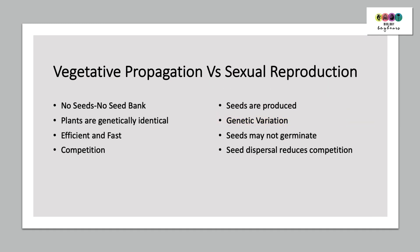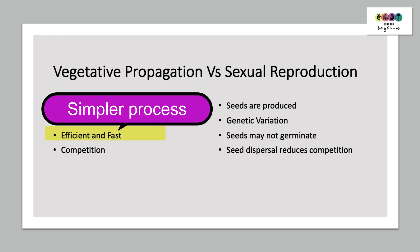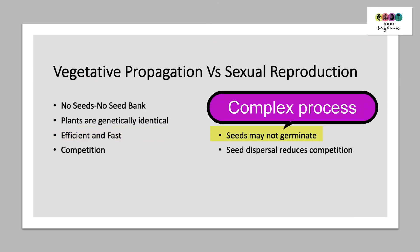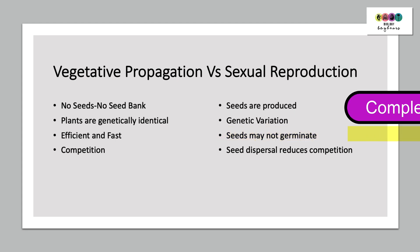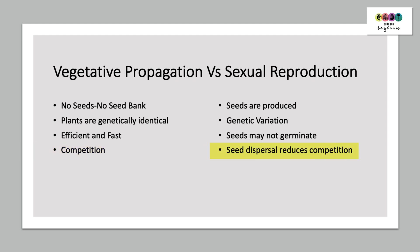When comparing vegetative propagation with sexual reproduction, it could be considered faster and more efficient because it's a simpler process, whereas sexual reproduction is more lengthy and complex, and after the process the seeds may not germinate. A disadvantage of vegetative propagation is that there is often high competition, because the parent plant is always very close to those smaller plants produced — there's no dispersal, so they compete for all resources. Whereas with sexual reproduction, because of seed dispersal, there is less competition.